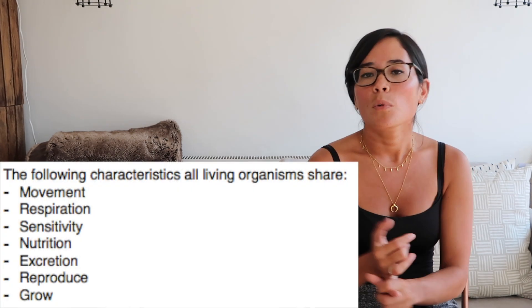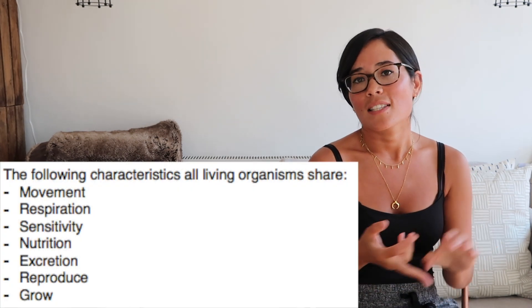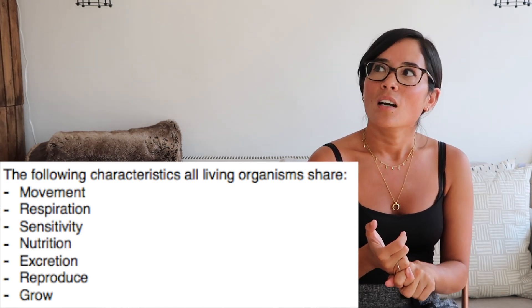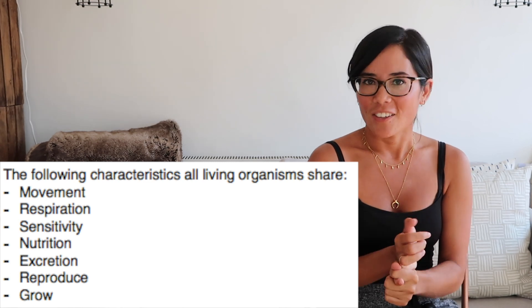We're going to start by looking at features that all living organisms have in common. Lots of people call that MRS NERG or MRS GREN. So remember, if they say give some features that all living organisms share, you're going to say movement, respiration, sensitivity, nutrition, excretion, reproduction, and growth — that just means getting bigger. So if it's non-living like a virus, you can easily say it does not move, it does not respire, it does not excrete. Just list any of the MRS NERG factors and you will get the marks.